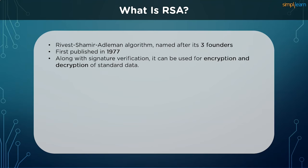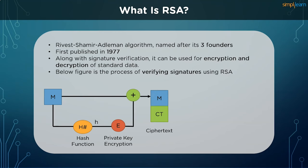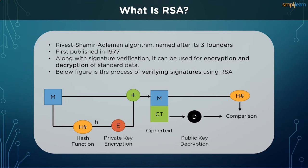RSA can also encrypt and decrypt general information to securely exchange data along with handling digital signature verification. We take our plaintext message M and pass it through a hash function to generate the digest H, which is then encrypted using the sender's private key. This is appended to the original plaintext message and sent over to the receiver. Once the receiver receives the bundle, the plaintext message is passed to the same hash function to generate a digest, and the ciphertext is decrypted using the public key of the sender. The remaining hashes are compared, and if the values match, the data integrity is verified and the sender is authenticated.